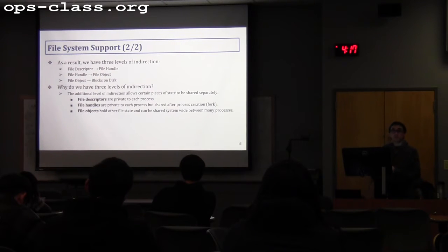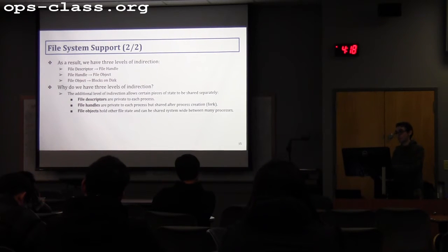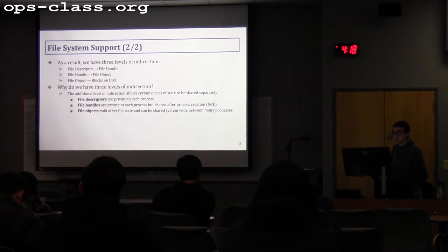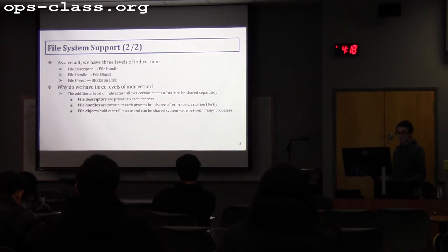We have three levels of indirection because we need to enforce three different sharing policies. The file descriptor and file table are private to each process. File handles are also private to each process, but if you fork — creating a child process — the file handle will be shared between the parent and child. The file object is shared system-wide: if more than one process points to the same file, they point to the same file object through their respective file handles.